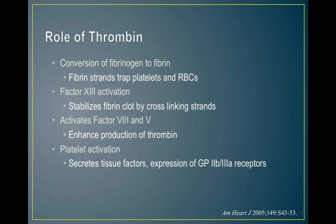The role of thrombin in acute coronary syndrome makes it an important target because inhibiting it helps prevent fibrin clot formation, secretion of tissue factor, and cross-linking via 2B3A receptors that cause further platelet buildup. Thrombin's main roles include converting fibrinogen to fibrin, activating factor 13 to stabilize the fibrin clot by cross-linking strands, activating factors 8 and 5 to enhance thrombin production, and platelet activation via tissue factor receptors.